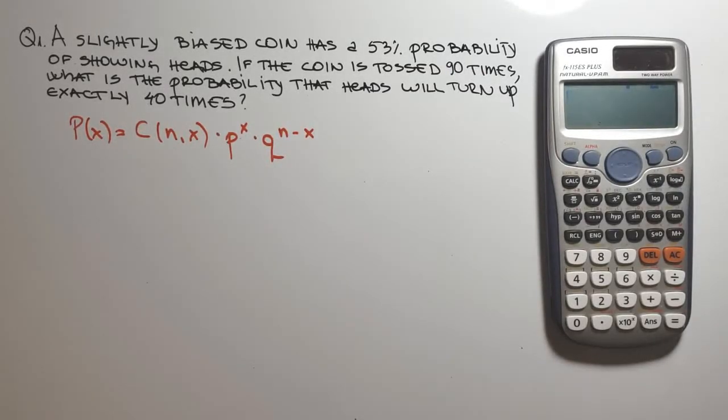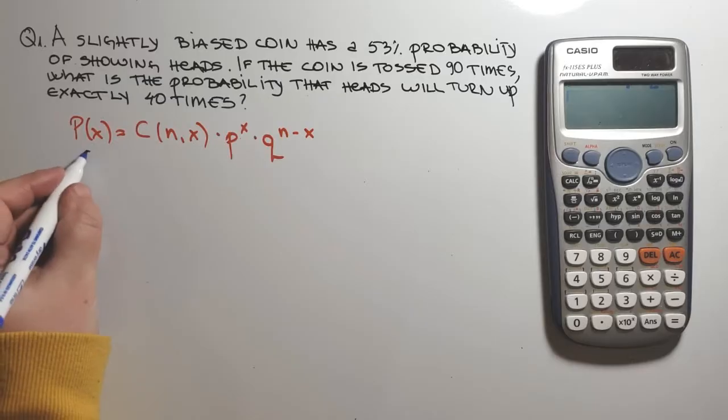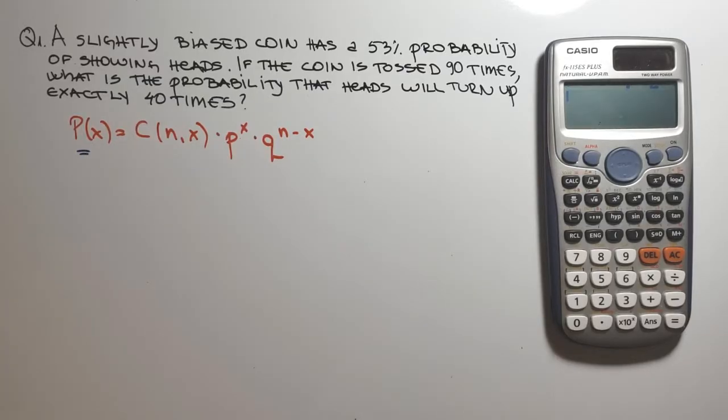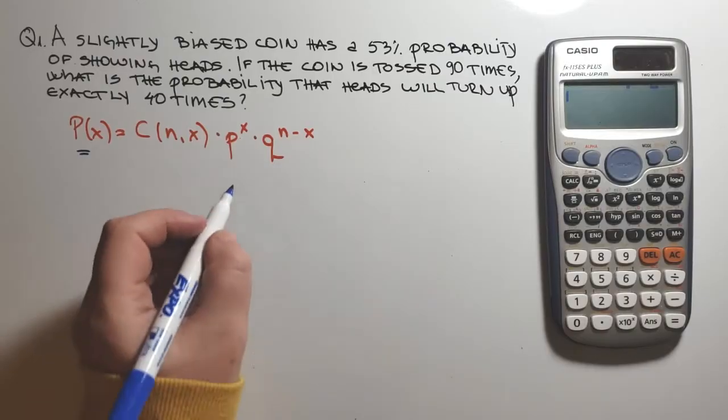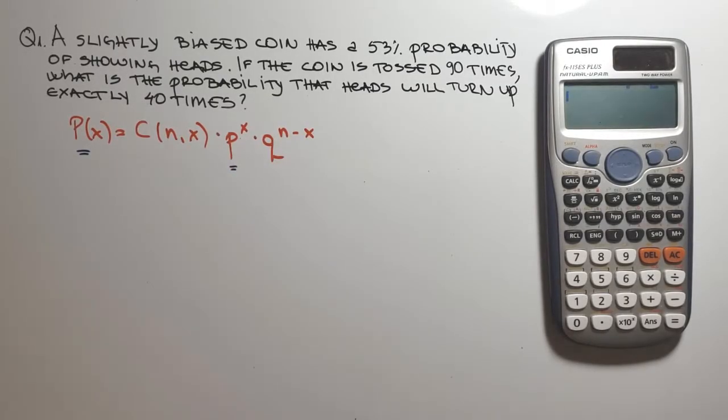So P of X is the probability that exactly X successes will occur in N trials. Lowercase p is the probability of success of the event.